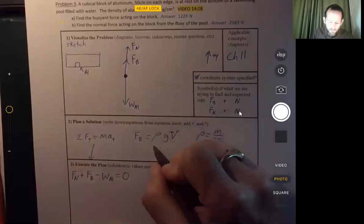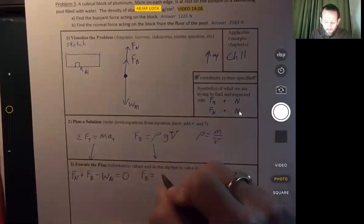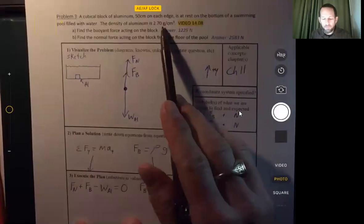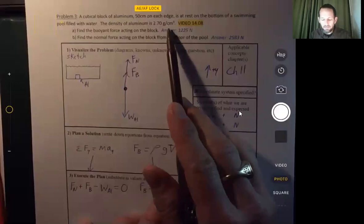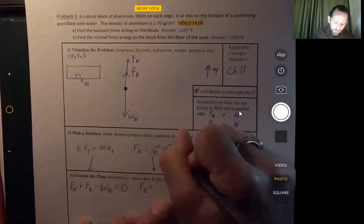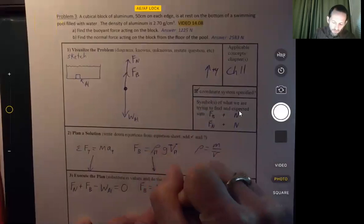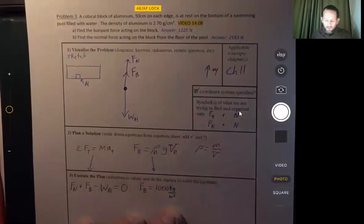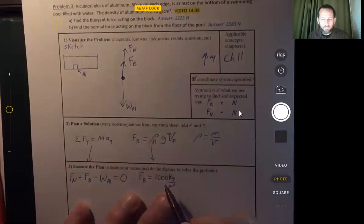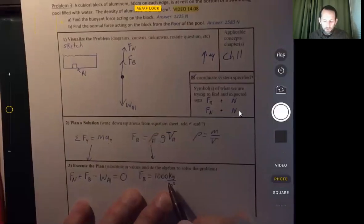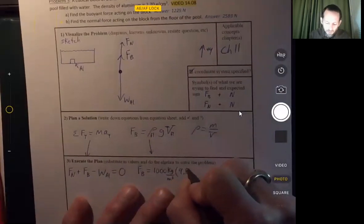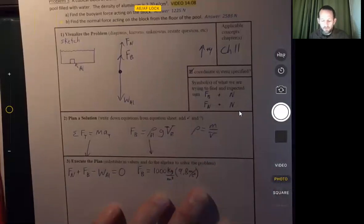Let's see what we can do with this buoyant force equation. Buoyant force is equal to the density. Well, it tells us the density of the aluminum is 2.7 grams per cubic centimeter. Are we going to use that density? Absolutely not. We're going to use the density of the fluid. The density of the fluid is 1,000 kilograms per cubic meter. Okay, not all problems are going to take place in freshwater. Sometimes you'll be in seawater or in air or other fluids, but we have had several problems that have been in freshwater with this density.